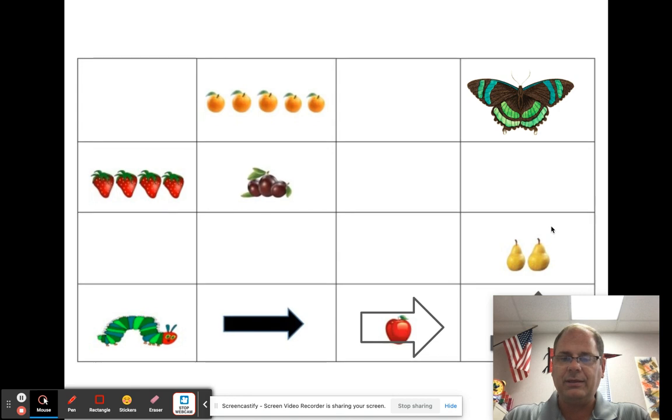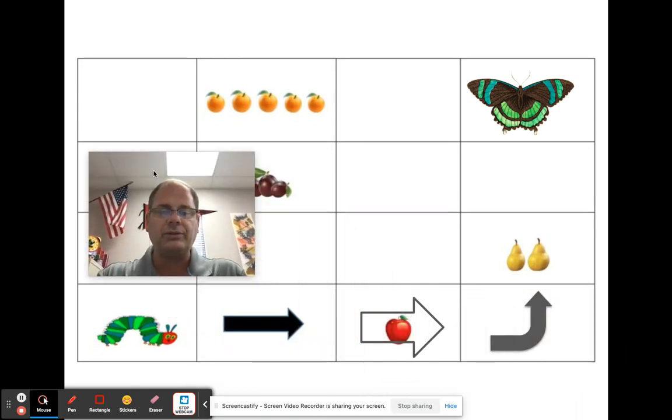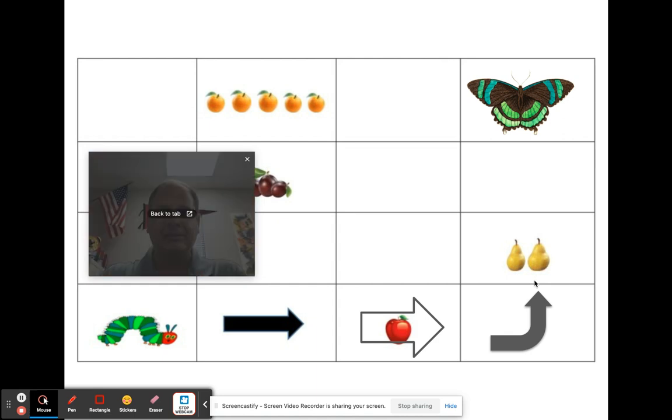And then he has to curve and turn. So he has straight, apple, turn. Then he eats the pear.